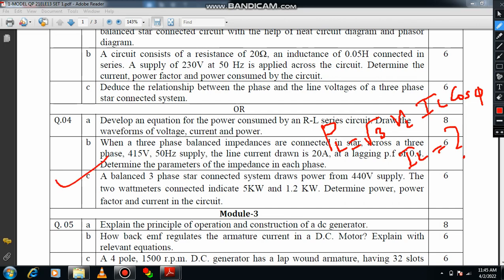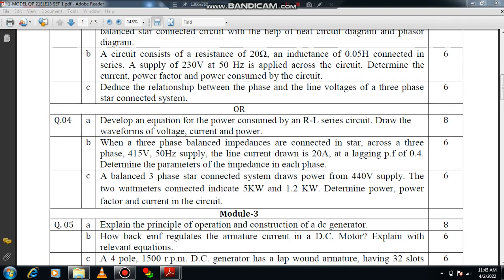Another question based on two wattmeter method. W1 and W2 are provided, supply voltage is also given. You are supposed to calculate the power, which is W1 plus W2. For power factor there is a formula you have to recall. And the current you can compute very easily. These are the basic questions which can be expected from module 2.